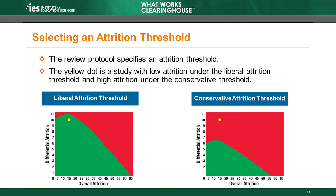The team members will use the same threshold for all studies they review under the protocol, and for all outcomes within each study. The graphs on this slide illustrate the difference between the liberal and conservative thresholds. The vertical axis in each graph represents differential attrition, and the horizontal axis represents overall attrition. The only difference is where the WWC draws the line between high and low attrition. Green means low attrition, and red means high attrition.